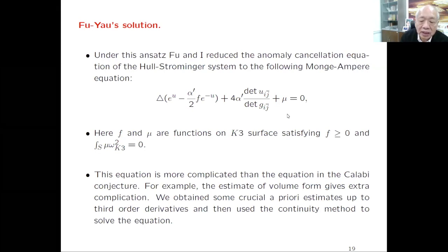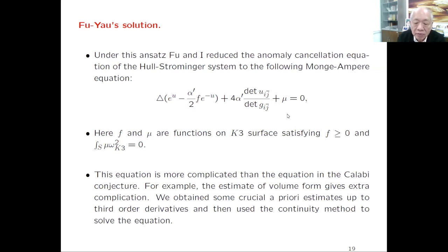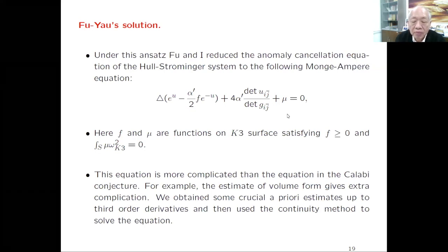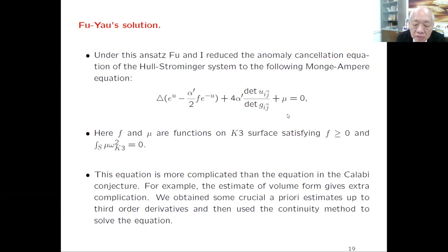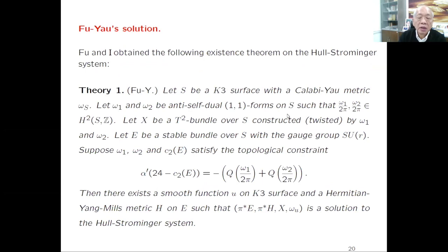We learn a great deal from the proof of the Calabi conjecture on how to proceed, but this equation is far more complicated. In the Calabi conjecture the volume form is given; here the volume form is complicated and requires a delicate a-priori estimate. Using non-trivial quantitative arguments, we overcome this. Fu and I therefore obtain the following existence theorem on the Strominger system: let S be a K3 surface with the Calabi-Yau metric, and let omega-1 and omega-2 be anti-self-dual (1,1)-forms on S representing integral cohomology classes.